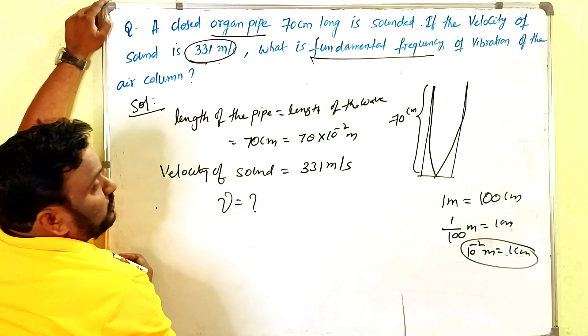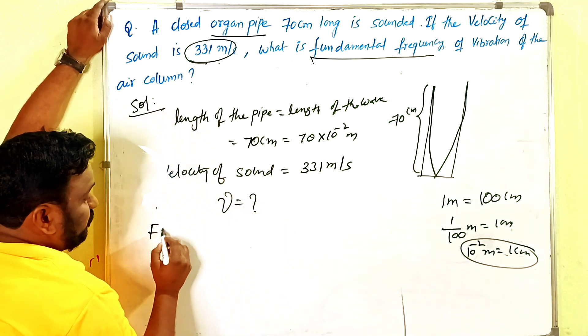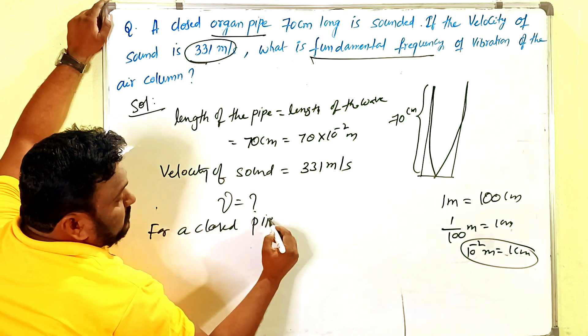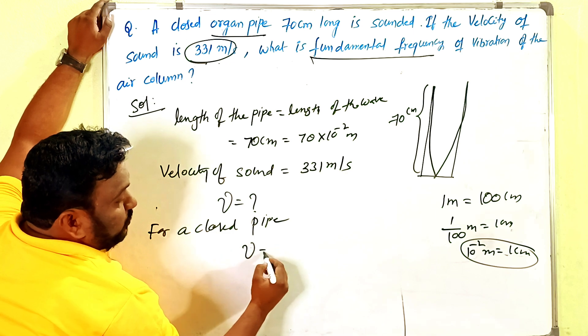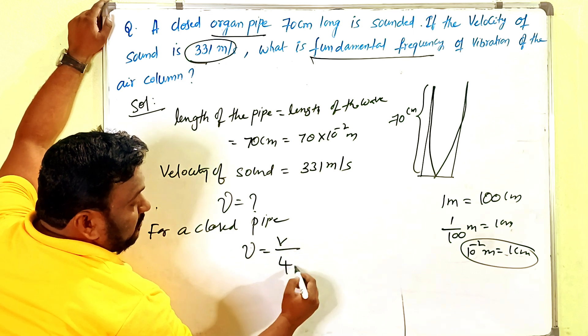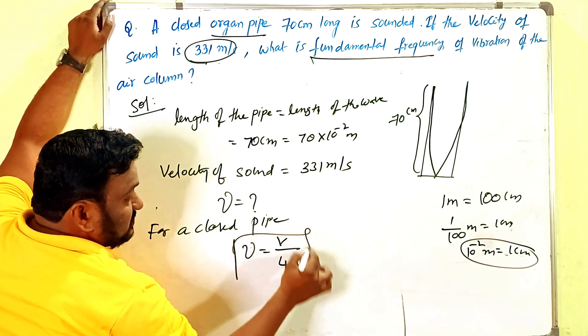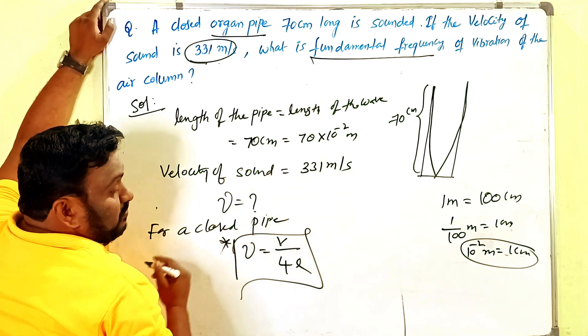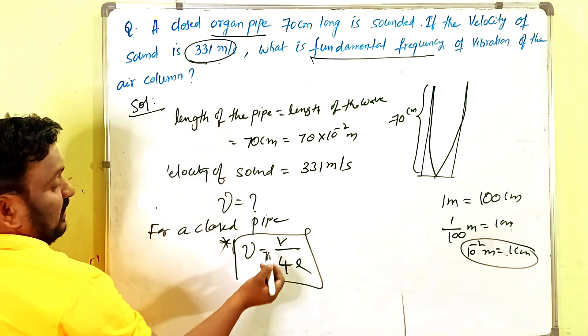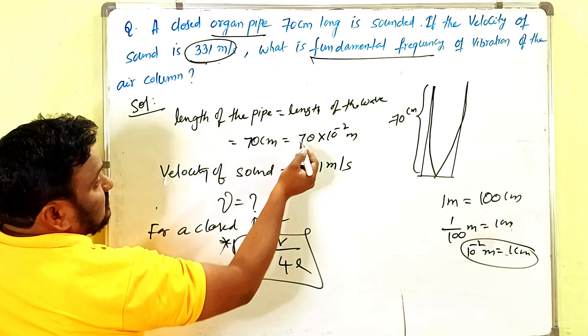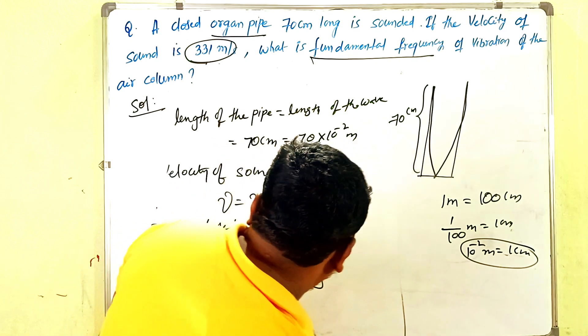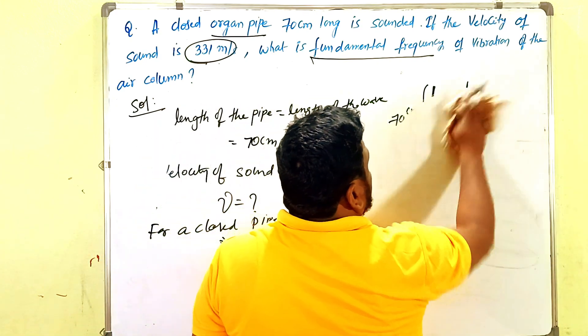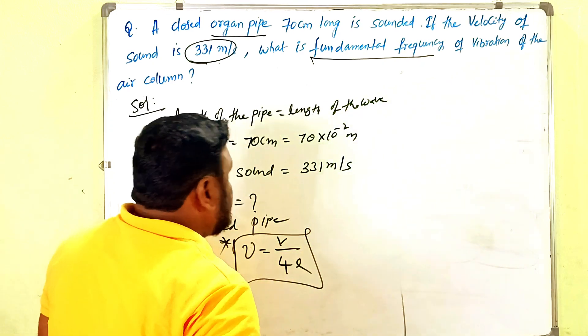So for a closed pipe, the frequency is ν = v/4L. For open pipe it's v/2L, for closed pipe v/4L. The velocity v is given and length L is given. What you have to find out is fundamental frequency. Very simple—you can directly substitute here.